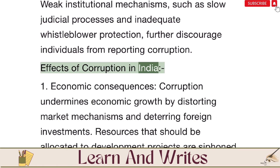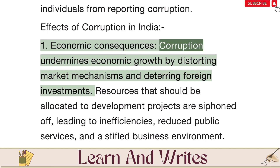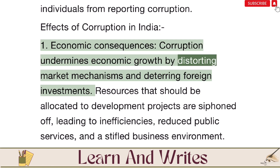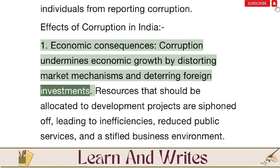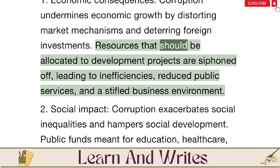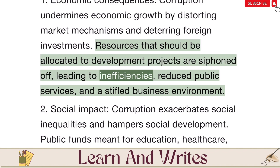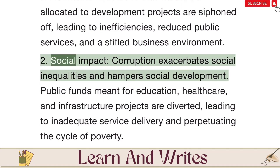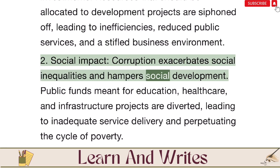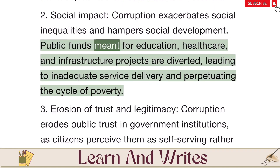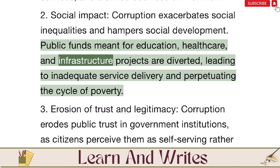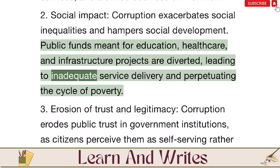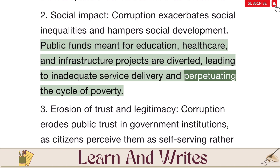Effects of Corruption in India. First, economic consequences: corruption undermines economic growth by distorting market mechanisms and deterring foreign investments. Resources that should be allocated to development projects are siphoned off, leading to inefficiencies, reduced public services, and a stifled business environment. Second, social impact: corruption exacerbates social inequalities and hampers social development. Public funds meant for education, healthcare, and infrastructure projects are diverted, leading to inadequate service delivery and perpetuating the cycle of poverty.